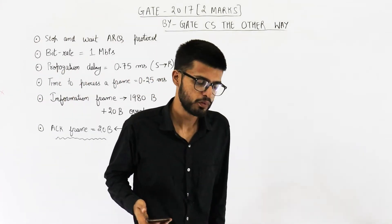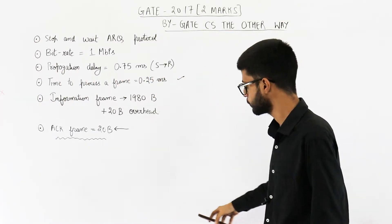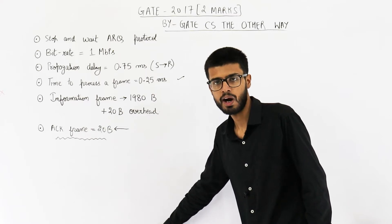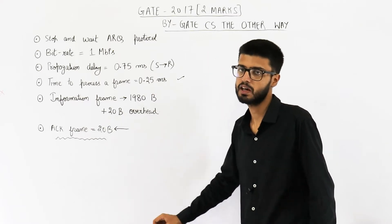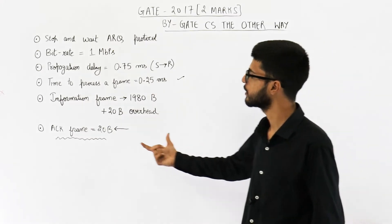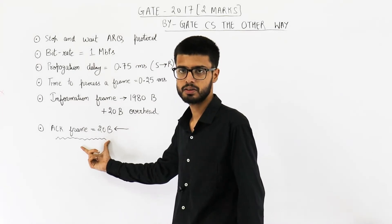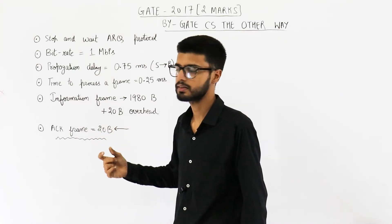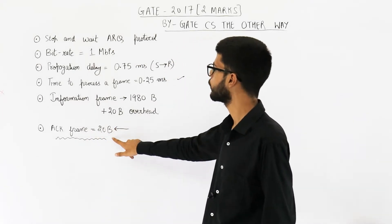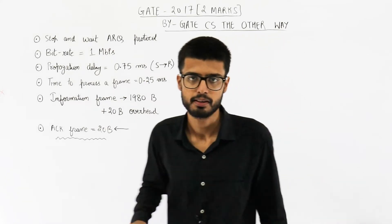We need to find out the efficiency. But you cannot use the regular formula of 1 divided by 1 plus 2A, because in this case we need to consider the transmission time of the acknowledgement frame and the processing delay.